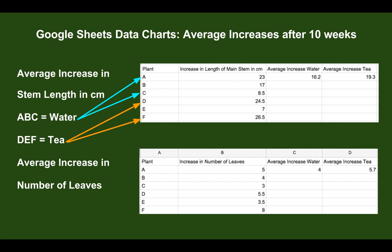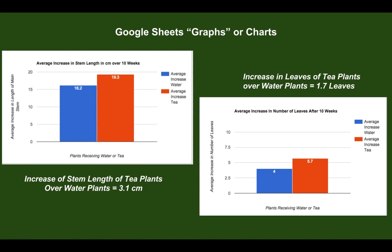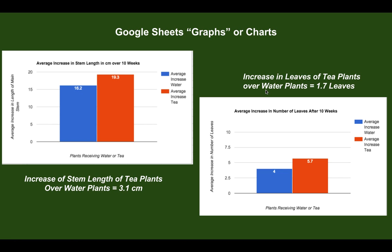I then put these averages into a Google chart to make a nice graph. Here you can see the average increase in plant stem length for the water plants and the tea plants, and the average increase in number of leaves for water versus tea plants. The tea plants showed 3.1 centimeters more stem growth and 1.7 more leaves than the water plants.